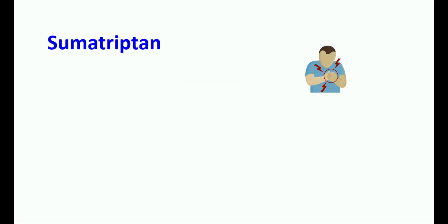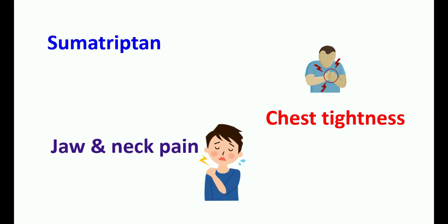Use of sumatriptone can also produce chest tightness, pressure, and pain in the chest due to decreased blood supply to the coronary system. Therefore, if you observe any chest tightness, immediately report to your doctor. This medication can also produce jaw and neck pain. These two symptoms also indicate decreased blood supply to the heart and may resemble angina-like attacks. Closely monitor these symptoms, and in case of increased severity or frequency, the dose of sumatriptone may be reduced or temporarily discontinued due to its effect on the coronary system.